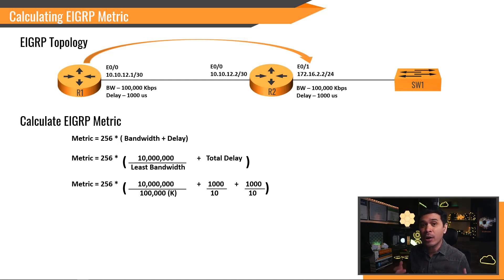If R2 interface E0-1 is changed to a higher value, let's say 1 gig, the least bandwidth value will remain the same. It will still be 100 mega because 100 megabits is less than 1 gig plus delay. The delay should be the total delay of R1 and R2 interfaces, but not in microseconds. It should be 10 to the power of negative 5. And this is why we are dividing it by 10.